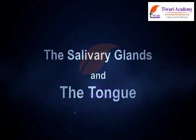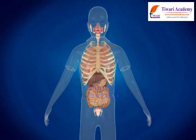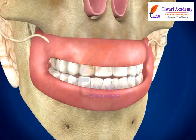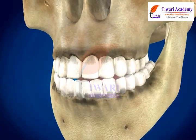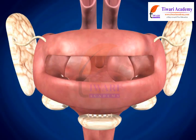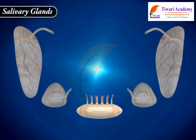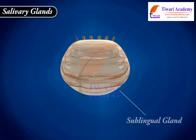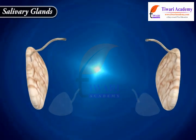Dear students, as we were discussing, the human digestive system starts with the mouth and buccal cavity. The buccal cavity contains the tongue, teeth, and salivary glands. There are three pairs of salivary glands in humans: the sublingual gland, the submaxillary gland, and the parotid gland.